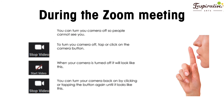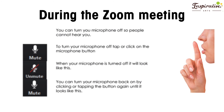During the Zoom meeting, you may not want people to see or hear you. To turn your camera off, tap or click the camera button. When it is off, a red line will appear over the camera symbol. To turn it back on, tap or click the camera button again. To turn off your microphone, tap or click the microphone button.